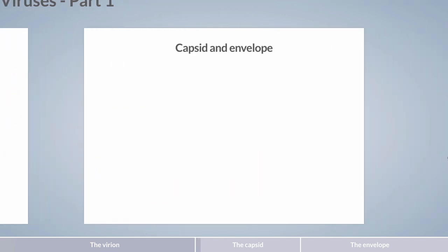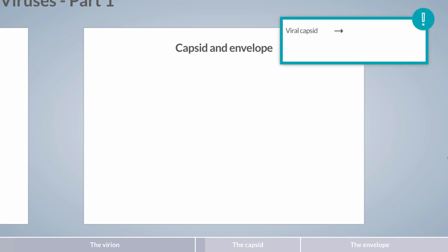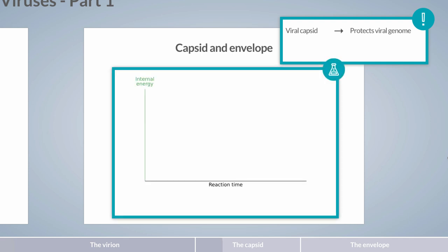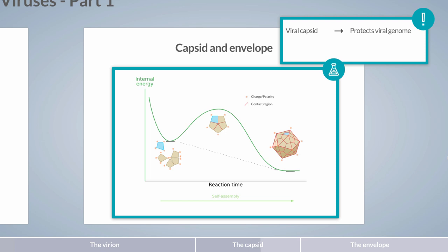Transfer of the virus genome and its release into the cell requires the viral capsid to be sufficiently stable to protect the genome while being labile enough to be released or uncoated inside the host cell. Structures with such opposite properties are called metastable. A capsid consists of identical subunits made up of structural proteins connected to each other in a process termed self-assembly. As the individual proteins assemble to form a large capsid, their surface charge and polarity is minimized while their contact region is maximized, leading to a decrease in the energy of the capsid system and providing the driving force for capsid self-assembly.